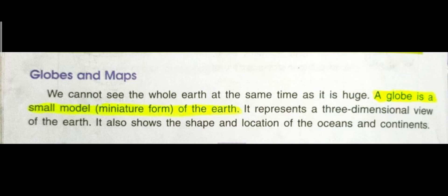Now, globes and maps. We cannot see the whole earth at the same time because it is huge. A globe is a small, miniature model of the earth. It represents a three-dimensional view of the earth and also shows the shape and location of the oceans and continents.